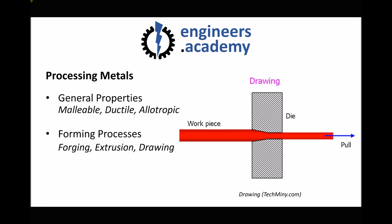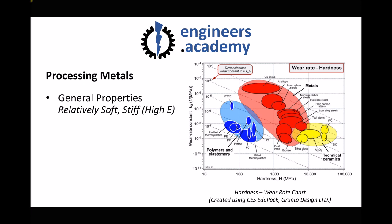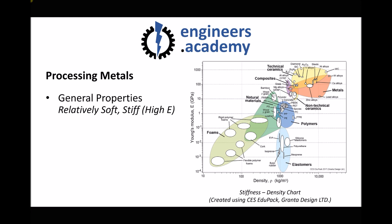Now metals do have some other properties that enable us to process them. We have also said previously that metals are relatively soft — and the reason I say relatively soft is because they are soft relative to our ceramic materials. We have also said that they are relatively stiff, meaning they are not particularly elastic. Here we have a chart of stiffness against density, and we see that our metals are sitting towards the top of this chart. The y-axis here is the Young's modulus or stiffness, so materials sitting towards the top have a high Young's modulus and therefore high stiffness.